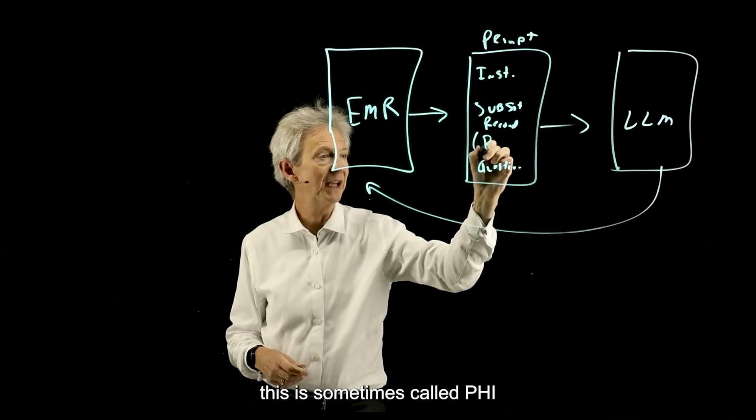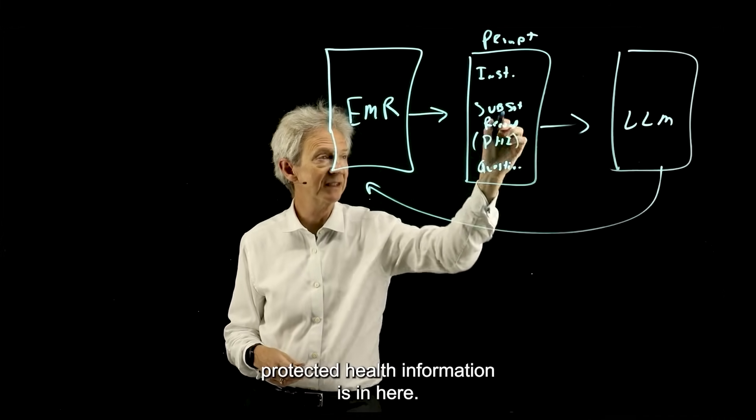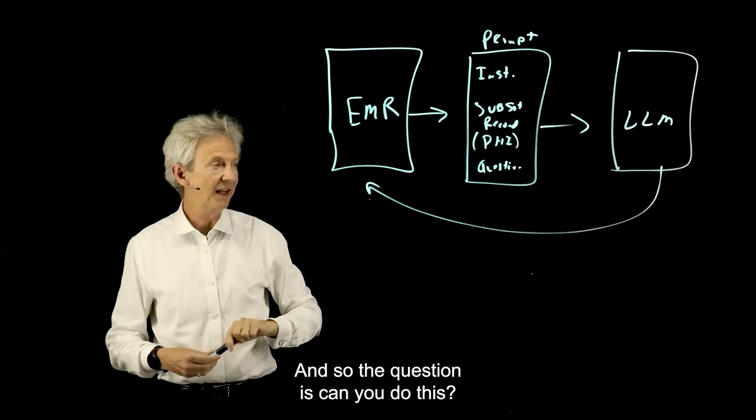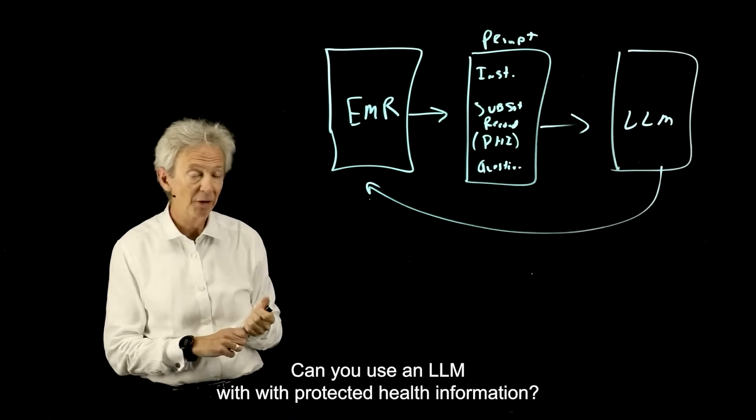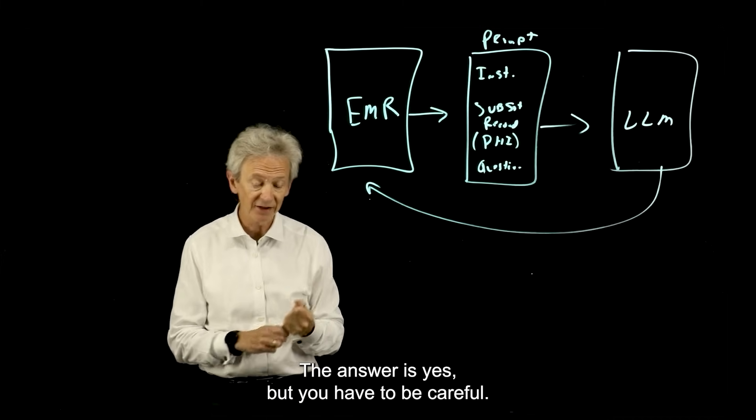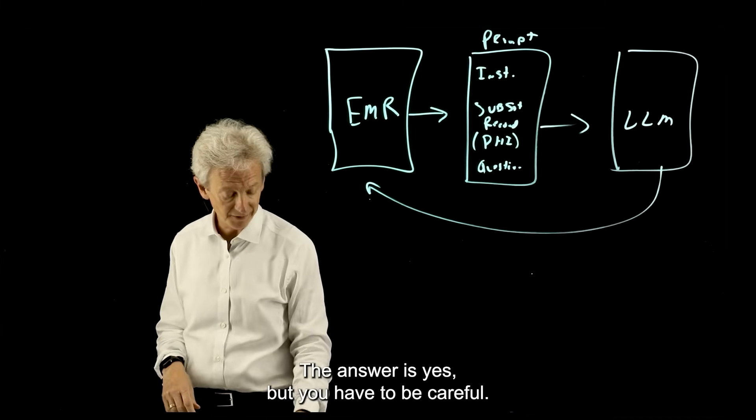So RAG system is basically augmenting just the question with some of these retrieved information like the patient medical record. This is sometimes called PHI, protected health information is in here. And so the question is, can you do this? Can you use an LLM with protected health information? The answer is yes, but you have to be careful.